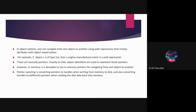In object systems, one can navigate from one object to another using path expressions that involve attributes with object-based values. For example, if object C is of type car, then C.engine.manufacturer.name is a path expression. These are basically pointers.